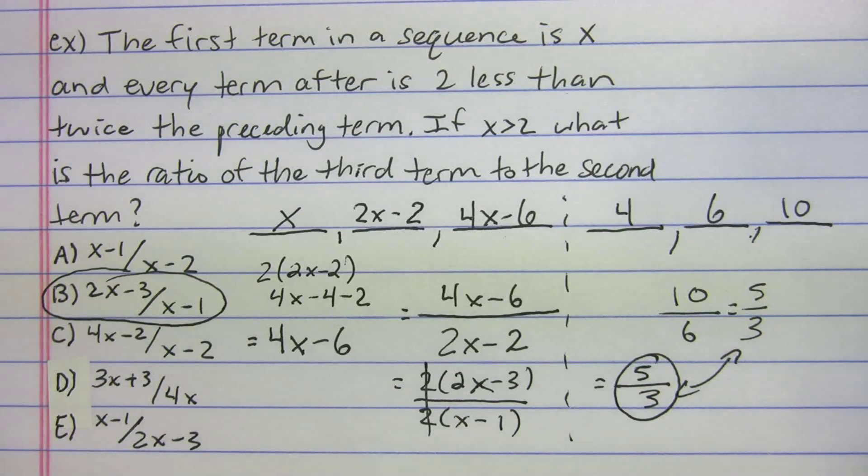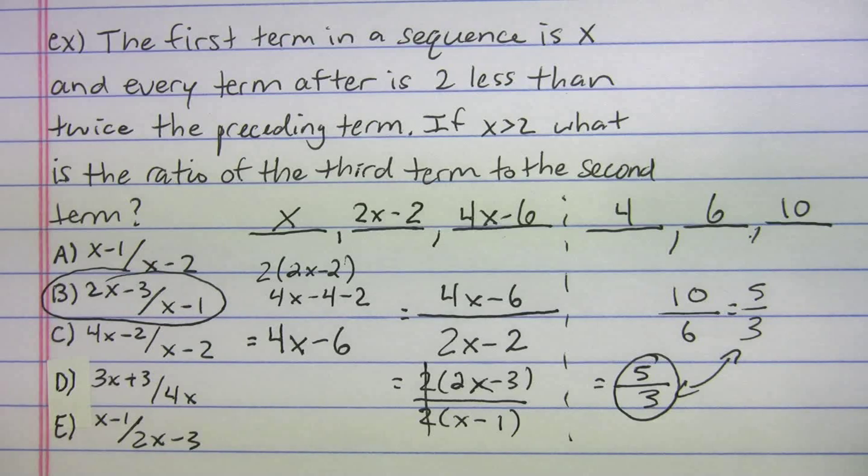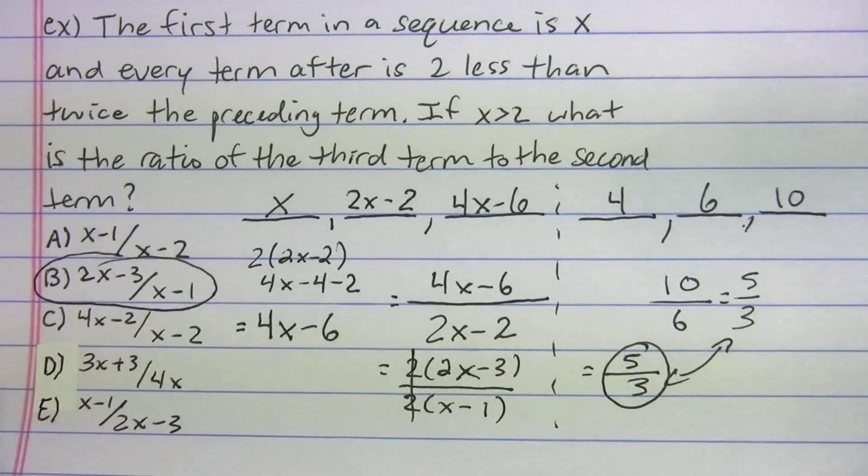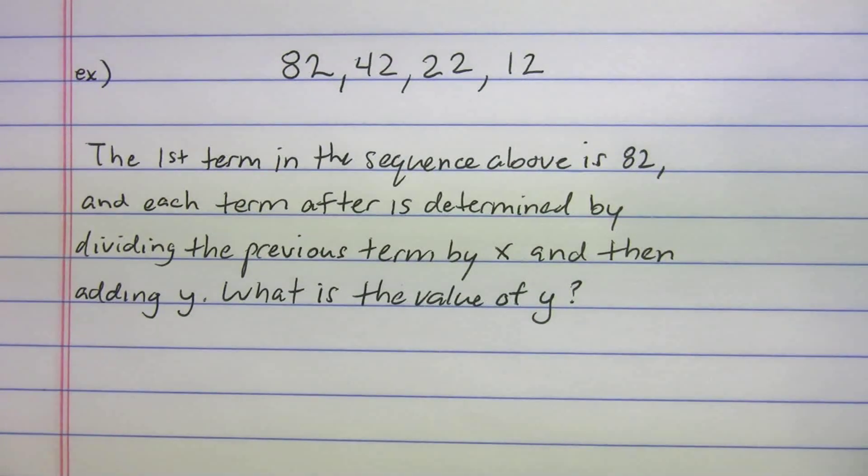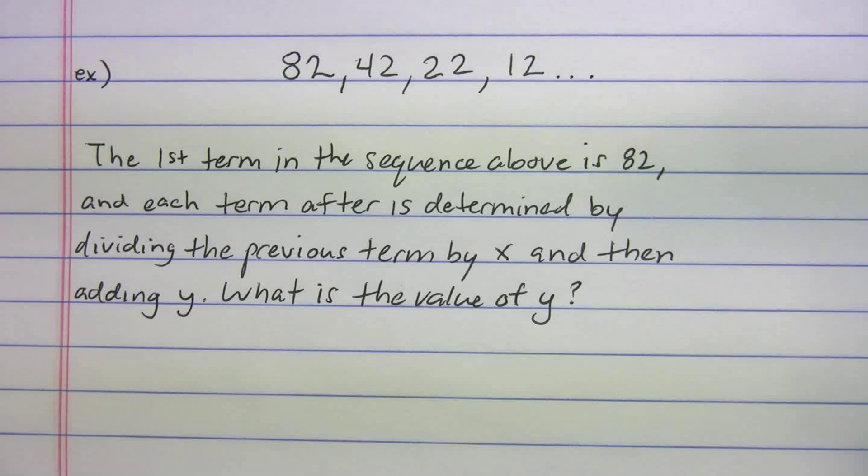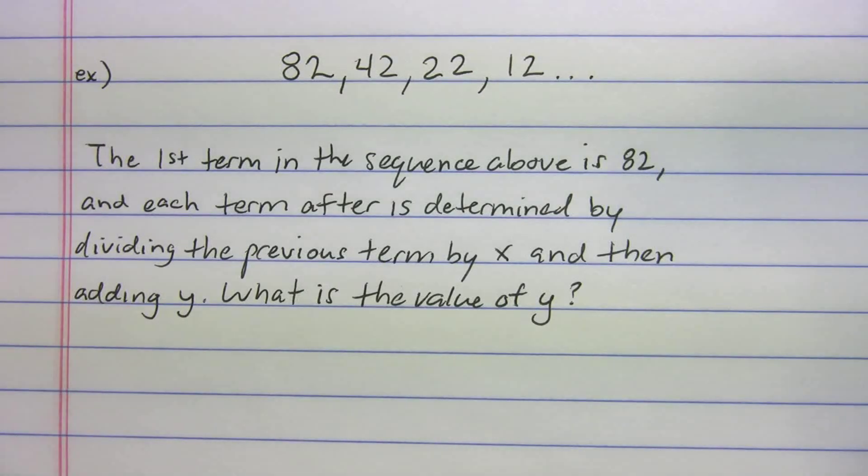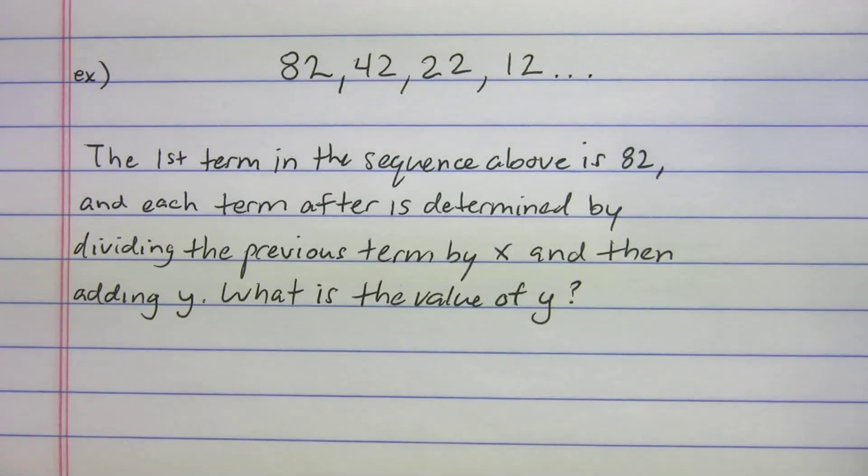That's another way to do this problem - you could choose numbers if doing it algebraically was too difficult. Let's see if I have time to finish up with one last one. So this one's actually a little bit easier than the two we just did. This one says the first term in the sequence above is 82, and each term after is determined by dividing the previous term by X and then adding Y. What is the value of Y?